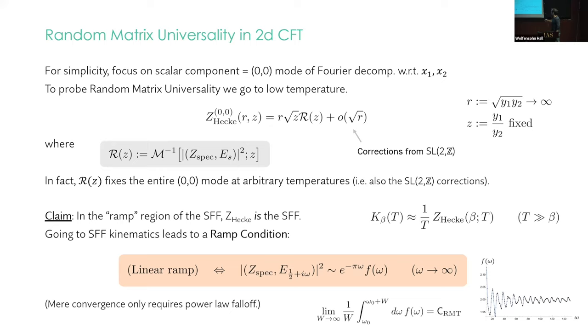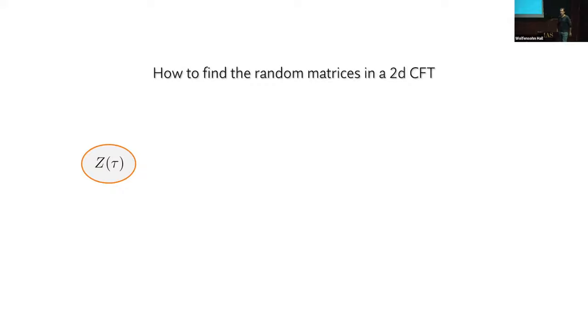So at infinity in spectral space, there must be an exponential decay times some function F of Omega, which at large Omega asymptotes to a constant. I've framed it this way to be careful, but at infinity, this just goes to a constant. Normally the constant sets the ramp, but you can have some oscillatory behavior all the way out to infinity. Morally speaking, this is just the slope of the ramp. Note that convergence of the spectral decomposition only requires that this has a power law falloff. So this is a condition of rapid decay encoding the chaos of the underlying theory.